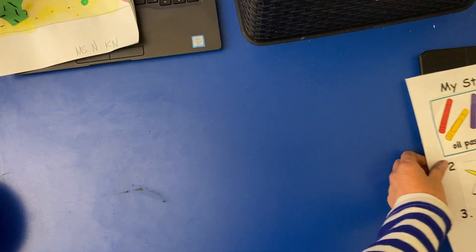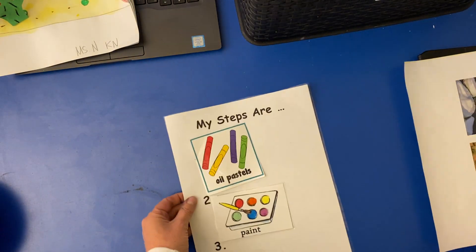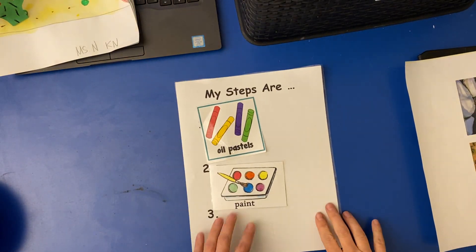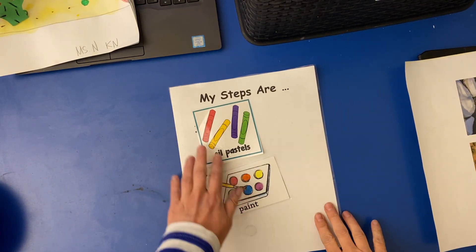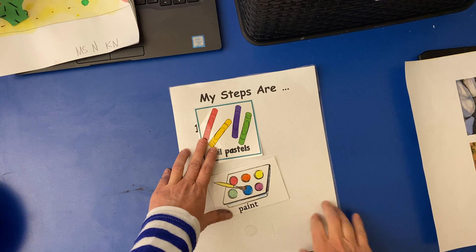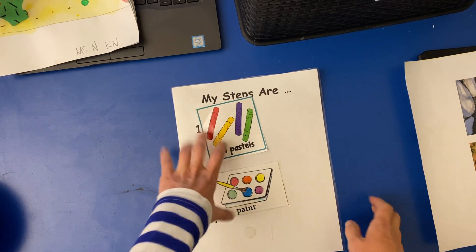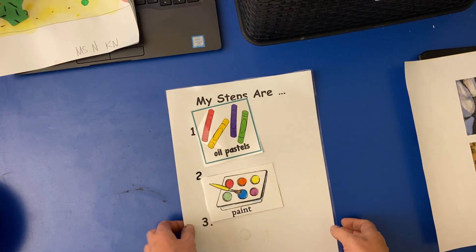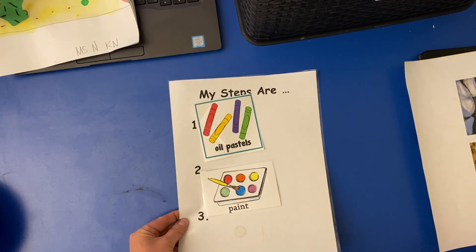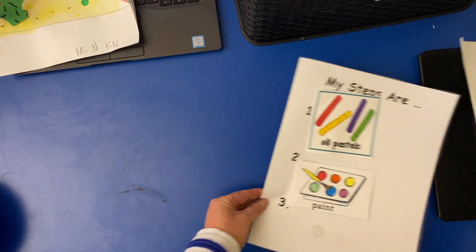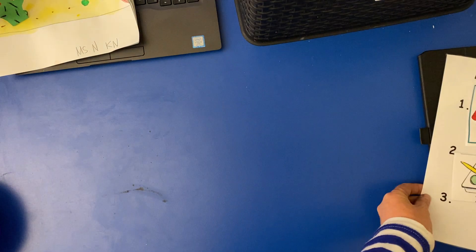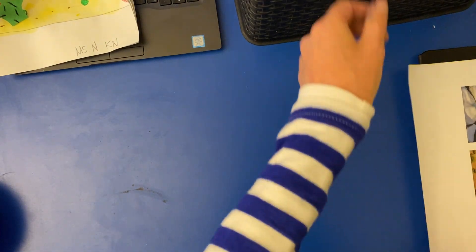Now here are our steps for today. You're going to be drawing with oil pastel and then painting. There's not a lot of steps but it can get confusing, so I really need you to listen closely.